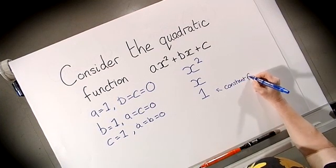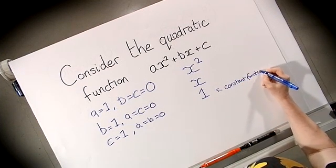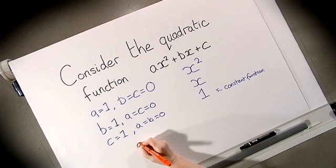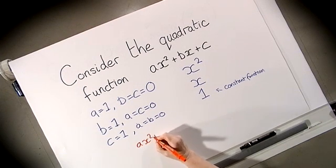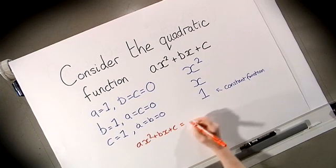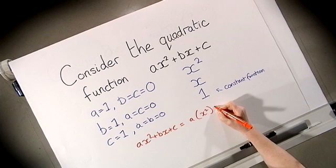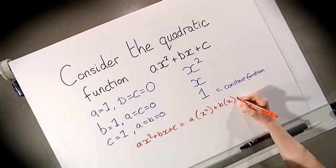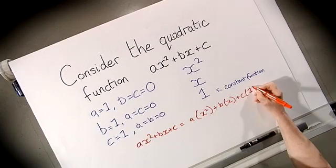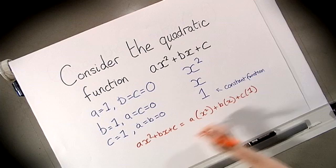Note that this is the constant function one, the function that is one everywhere. What we can now do is we can write our quadratic as a linear combination, so ax² + bx + c is a times x² plus b times x plus c times that constant function one.